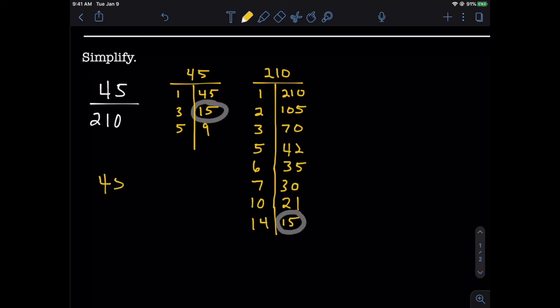We see that 15 is the biggest number that shows up in both tables, so that means that 15 is our GCF. To simplify our fraction here, we're going to divide our numerator and denominator by our GCF of 15, and that's going to get us to our final answer here of 3 over 14. There we go. So 45 over 210 is equal to 3 fourteenths.